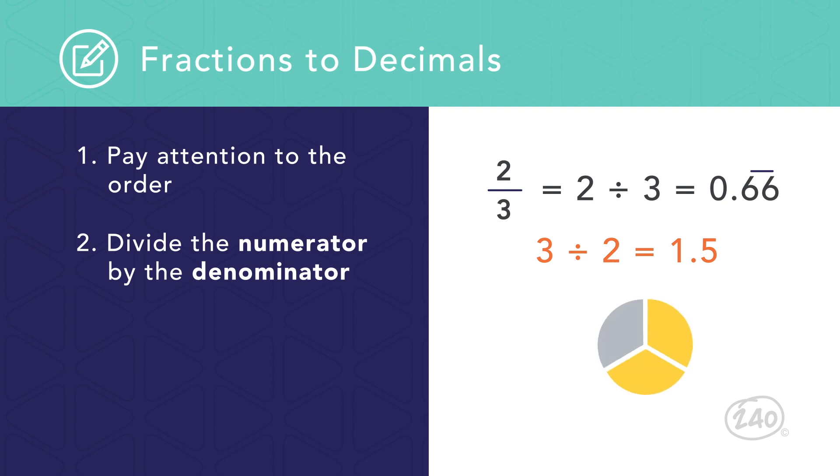It is important to realize that two thirds means there are two out of three total parts. So two thirds should be less than one.